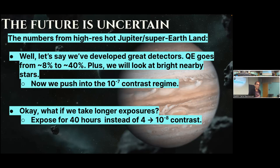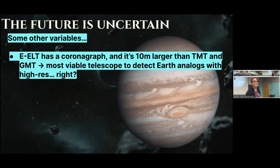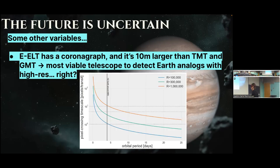That's not quite Earth analog land — that's 10⁻⁹ to 10⁻¹⁰. Even with really good detectors where quantum efficiency goes from 8% to 40%, and looking at only bright naked-eye stars, that might push us to 10⁻⁶ to 10⁻⁷ contrast. Exposing for 40 hours instead of four gives you 10⁻⁸ — still not 10⁻⁹ or 10⁻¹⁰. These are optimistic, generous numbers. The E-ELT has a coronagraph and is 10 times larger than TMT and GMT, so it's really going to be the most viable telescope to detect Earth analogs — with one more big caveat.